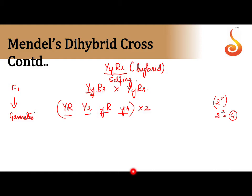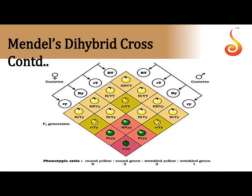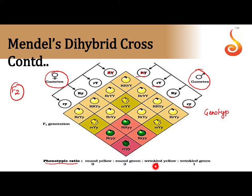Now we do the Punnett checkerboard crossing to get the F2 generation. We write all 4 gametes on each side, one set considered as male and the other as female, and cross all columns with all rows. For example, capital R capital Y crossed with capital R capital Y gives capital R capital R capital Y capital Y. Fill up the whole checkerboard similarly. Filling this entire F2 generation carries another one mark, giving us 3 marks total so far.